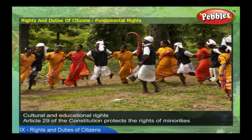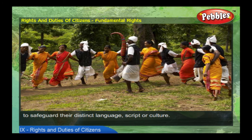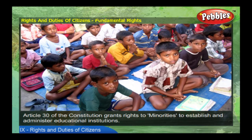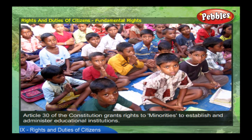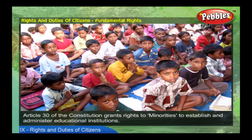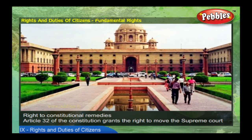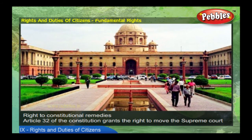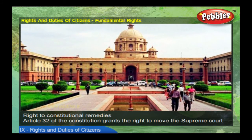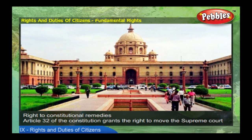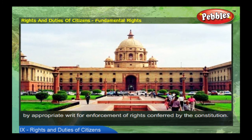Cultural and educational rights: Article 29 of the constitution protects the rights of minorities to safeguard their distinct language, script, or culture. Article 30 of the constitution grants rights to minorities to establish and administer educational institutions. Right to constitutional remedies: Article 32 of the constitution grants the right to move to the Supreme Court by appropriate writ for enforcement of rights.